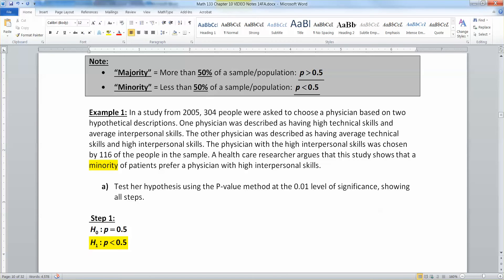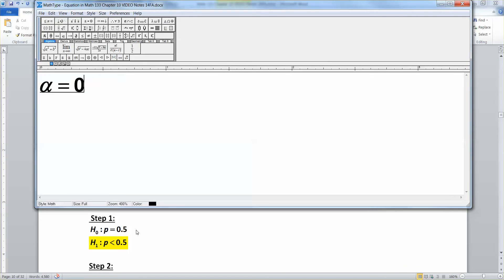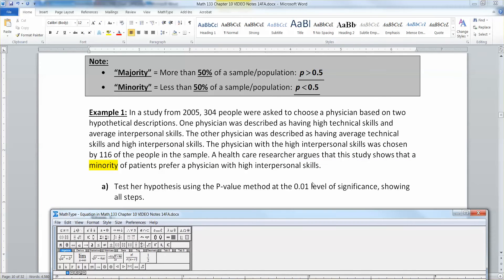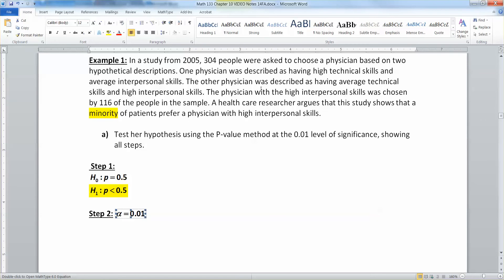Step two. Everybody's favorite step is step two, because it's always given to you somewhere in the problem. Step two, your alpha. Alpha is 0.01 because it's given. When they say level of significance, that is a fancy way of saying alpha. So, let me highlight that for you in blue. This right here, those words. So, in these problems, they will either be written alpha equals 0.01, or they will say the level of significance. And once they say level of significance, that's alpha.